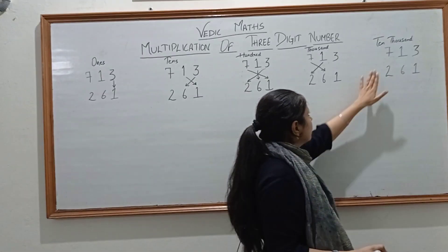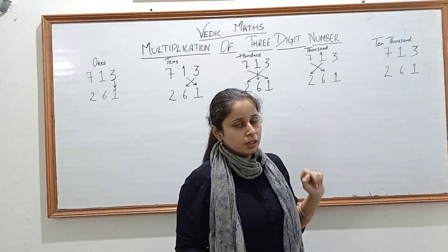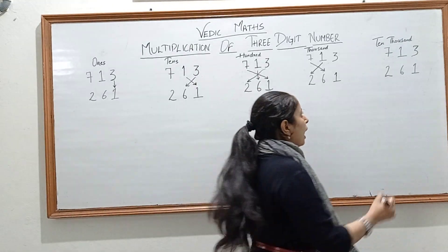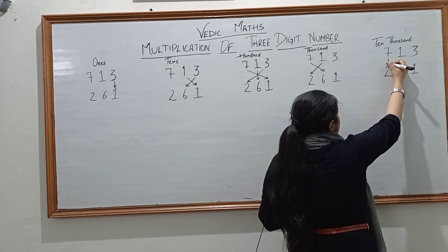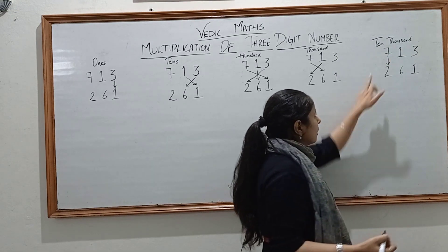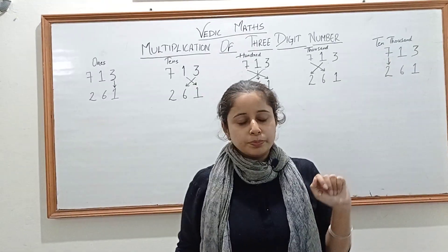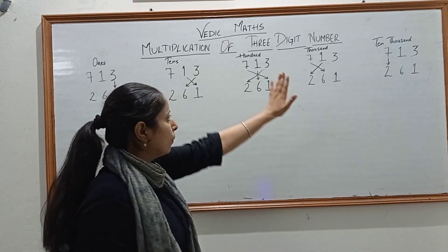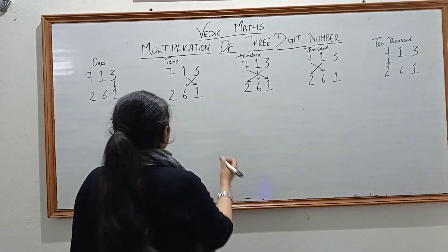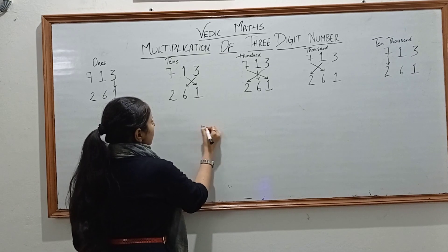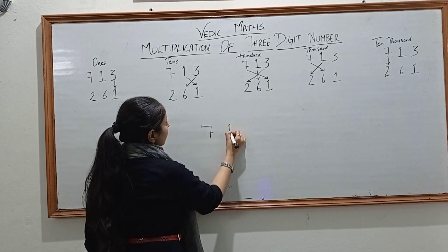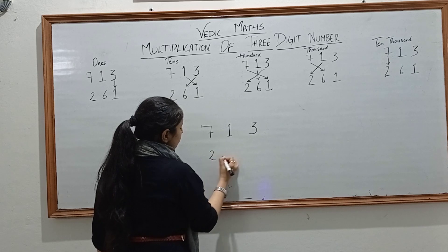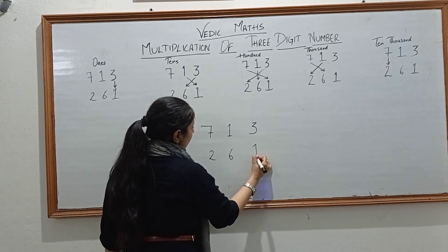Now the digit on the 10000th place: for getting this digit, you have to multiply these 2 digits — that is 7 into 2. Now let's solve this question by following this pattern. I am writing the question here: 713 × 261.